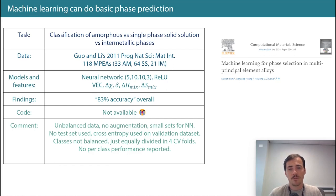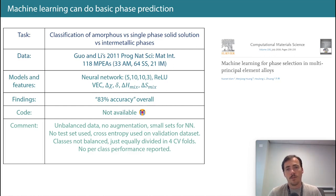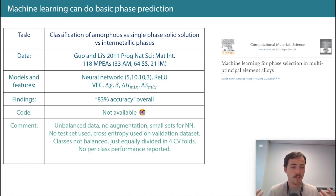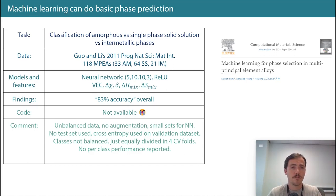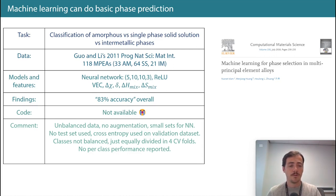They did just do cross-validation with four-fold CV, and they only reported an overall accuracy, not per-class performance. But if you're trying to use this algorithm to predict what you want to make — say a single-phase solid solution — then what you really care about is the performance on the solid solution class specifically.